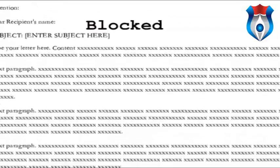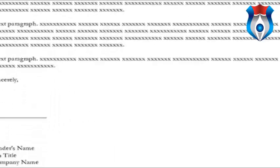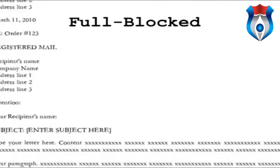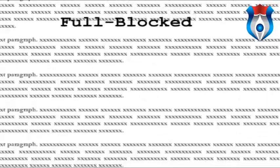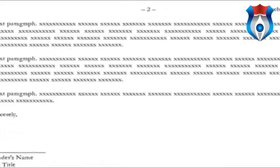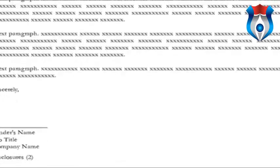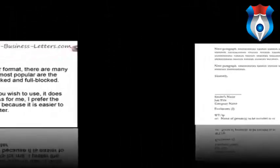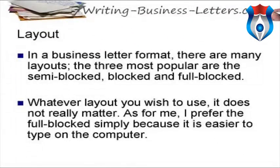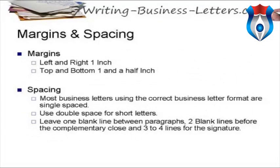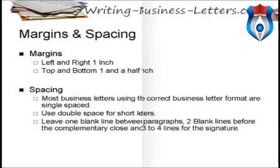In a blocked format, all text is aligned to the left margin and paragraphs are not indented. In a full-blocked format, all text is justified with paragraphs not indented — the text aligns with both the left and right margins. I prefer the full-blocked simply because it is easier to type on the computer. Margins: left and right one inch, top and bottom one and a half inch. Spacing: most business letters are single-spaced; use double space for short letters. Leave one blank line between paragraphs, two blank lines before the complimentary close, and three to four lines for the signature.